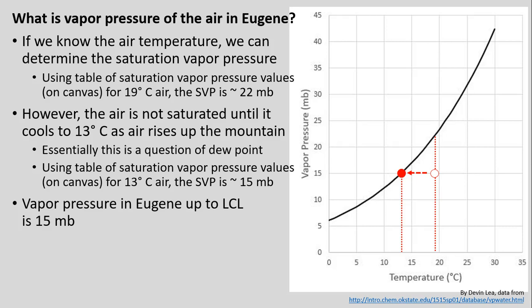First, we want to ask ourselves some questions using our humidity concepts. What is the vapor pressure of our air in Eugene? Because we know the air temperature, we can determine the air's saturation vapor pressure from either a table or a graph. Using that table of saturation vapor pressure values, or the graph, we trace up from 19°C and see that our saturation vapor pressure is about 22 millibars. But again, we know that the air isn't saturated — it will not be saturated until it reaches the lifting condensation level.